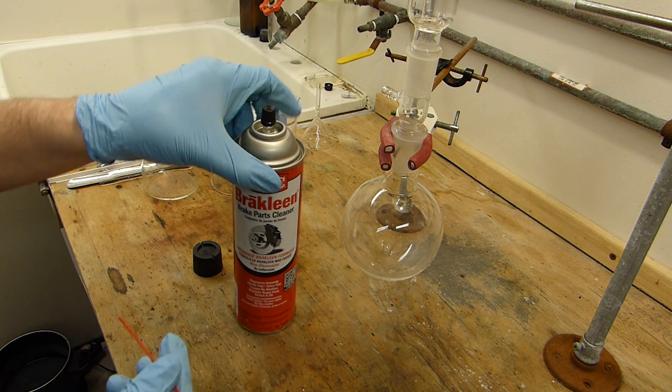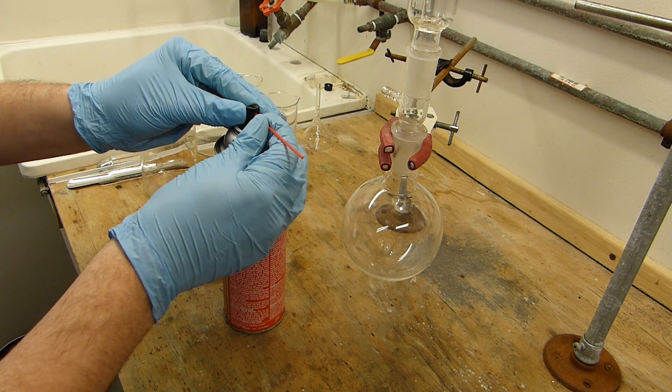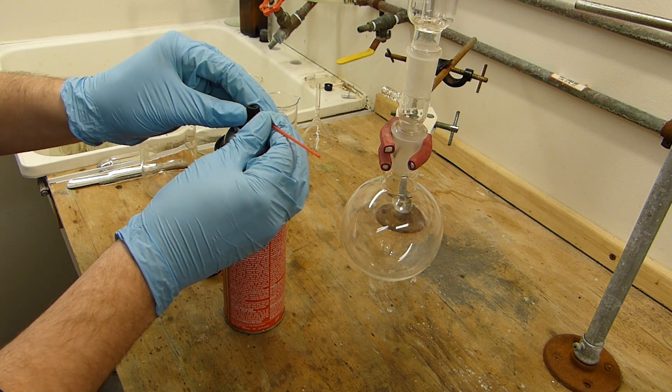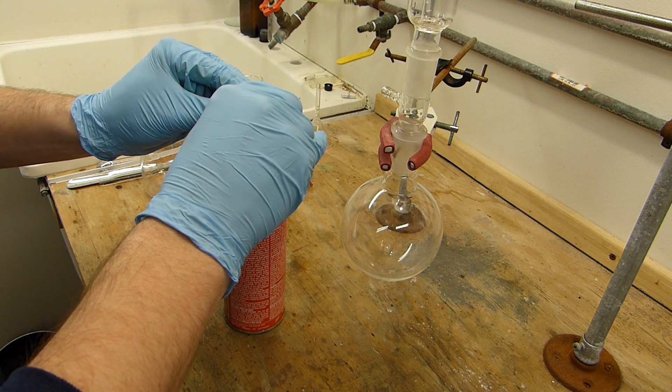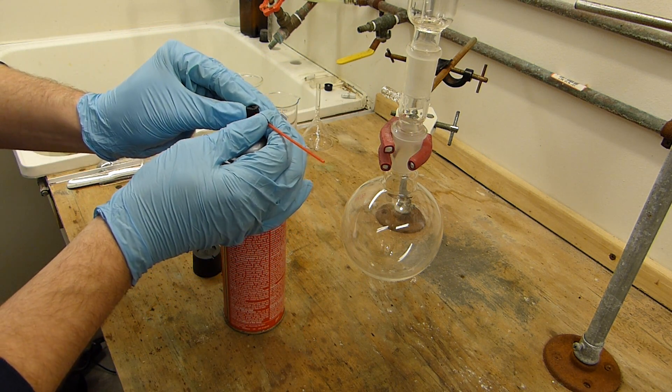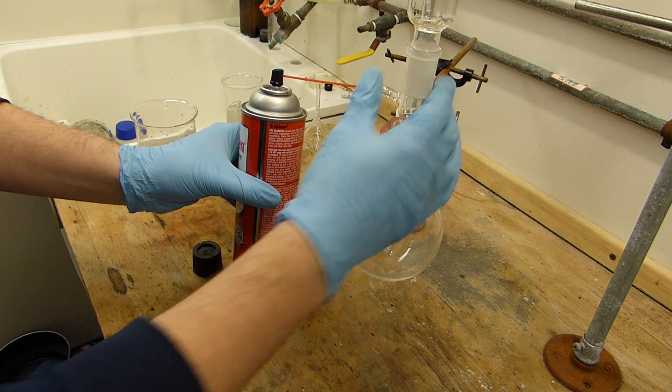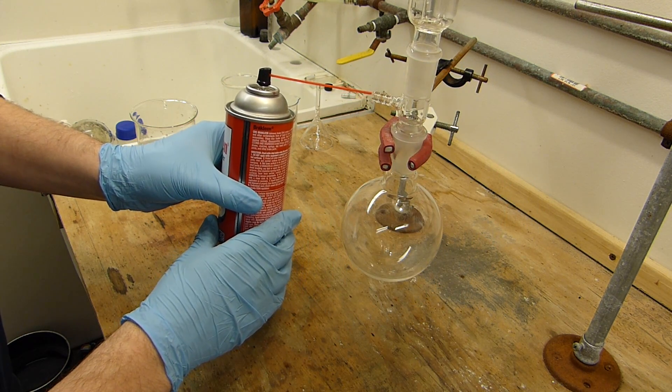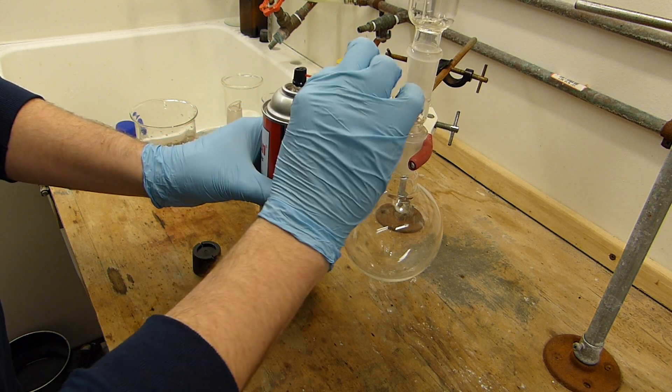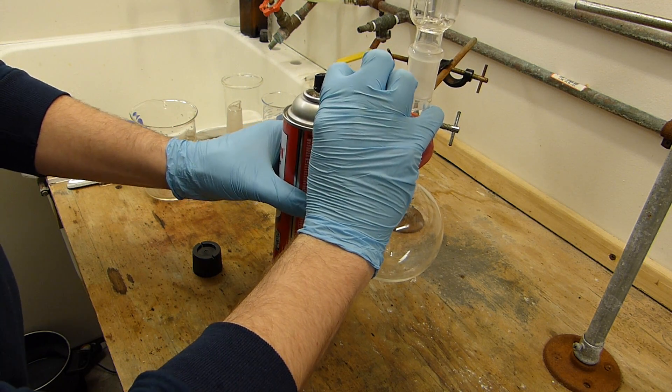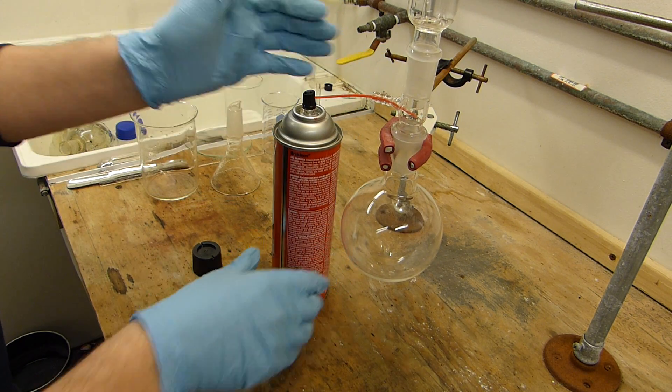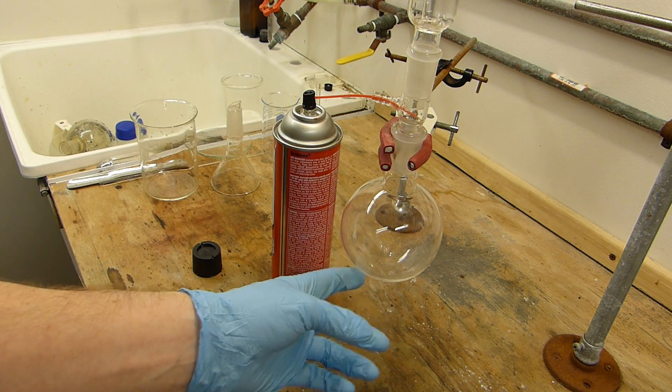To empty it I'll do the same thing I did in my diethyl ether video. I've placed this in the freezer. It's not quite frozen yet but it's still rather cold. Tetrachloroethylene has a much higher boiling point than diethyl ether so you don't really need to get it as cold. Anyway, I'll put the straw on the can and then the straw will be inserted into this side arm here, and I'm going to push it as far down into the flask as I can and then I'm going to go ahead and squirt the entire can into this flask.